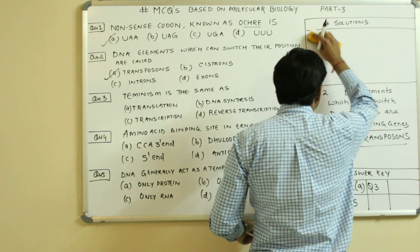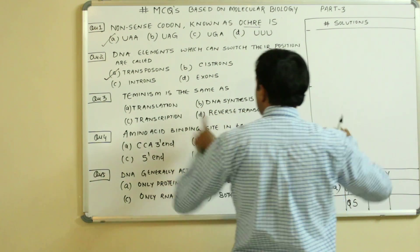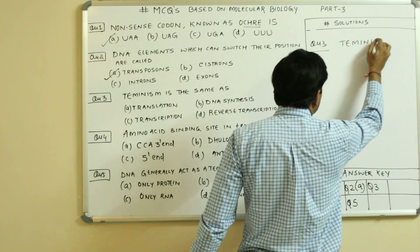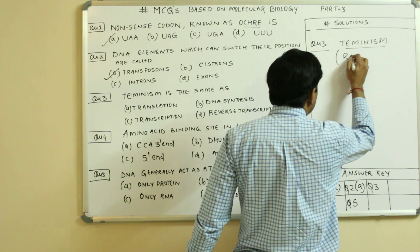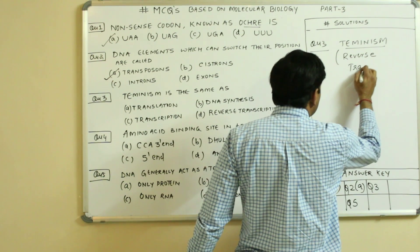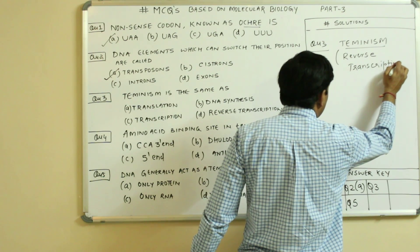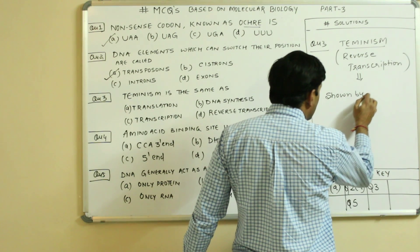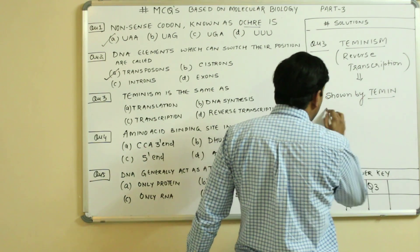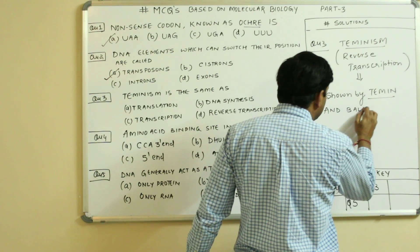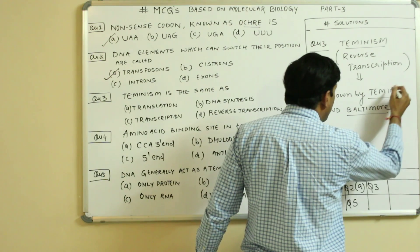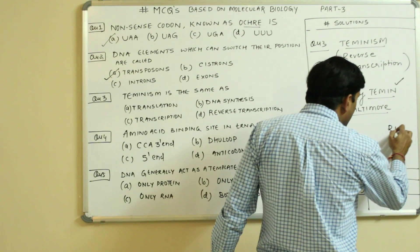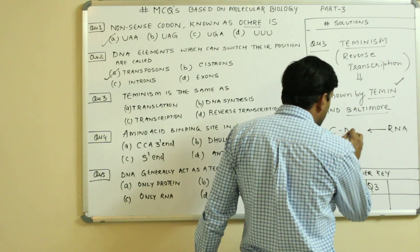The next question: Teminism is the same as... First, you must know what Teminism is. Teminism is the other name of reverse transcription, which was shown by the scientists Temin and Baltimore. By the name Temin, reverse transcription is also called Teminism, by which RNA can form DNA.